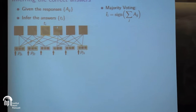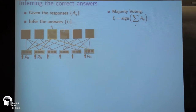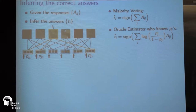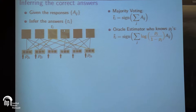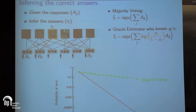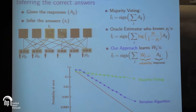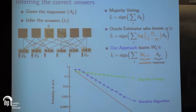Given responses and the graph, we need to infer the tasks. Majority voting aggregates all responses and takes the sign. If someone gave you the actual quality of all workers, you'd take weighted majority voting weighted by log(p_j / (1 − p_j)), which is the optimal decision. There's a big gap between majority voting and the oracle estimator. Our goal is an efficient algorithm that doesn't use the oracle but achieves similar performance — we need to estimate the reliability of workers.